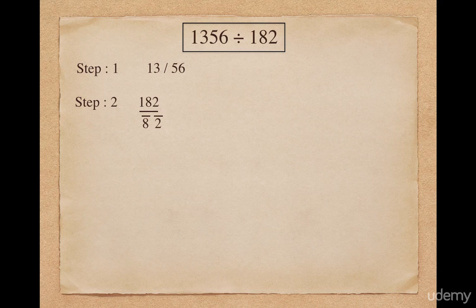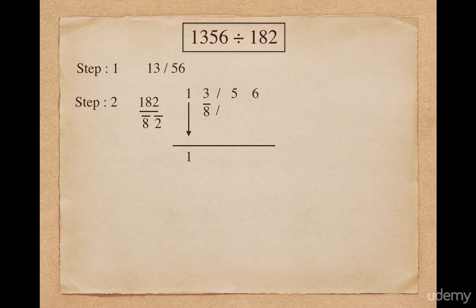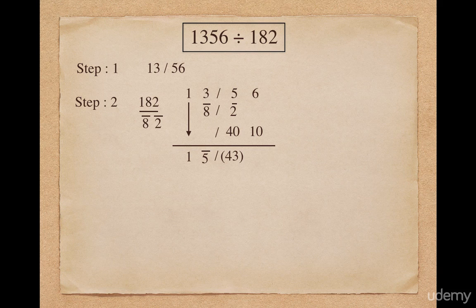So now onwards my divisor will be 8-bar and 2-bar. I follow the same steps as in the Nikhilam formula. I put the first digit 1 as it is. 1 multiplied with individual digits 8-bar and 2-bar gives me 8-bar and 2-bar. Adding all digits of the second column gives me 5-bar. 5-bar multiplied with individual digits 8-bar and 2-bar gives me 40 and 10. Adding all digits of the third column gives me 43, and adding all digits of the last column gives me 16. Out of 16, I consider 1 as carry, so the final remainder will be 446.